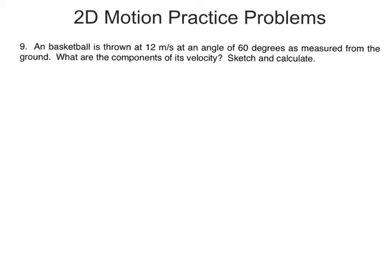It says the basketball is thrown at 12 meters per second, so there's initial velocity at an angle of 60 degrees with horizontal. So we can sketch in 12 meters per second is our initial velocity, and that's at a 60 degree angle.